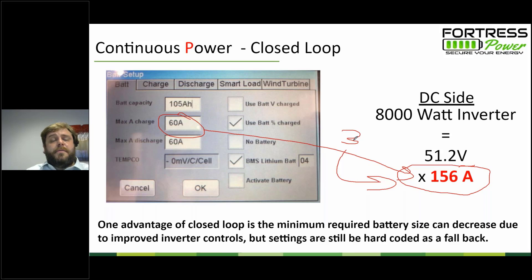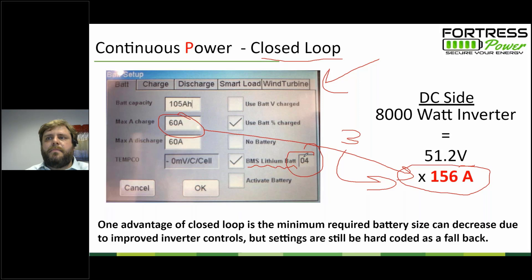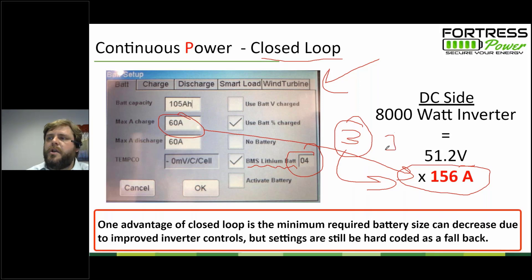Open loop is less controlled than if the battery has a computer that talks directly to the inverter. Here we have an example of closed loop: for this particular inverter manufacturer, they have a BMS setting, and our BMS in their system is number four. When we use that setting, it knows we're using the inverter with these batteries, and that actually allows us to use two batteries instead of three.